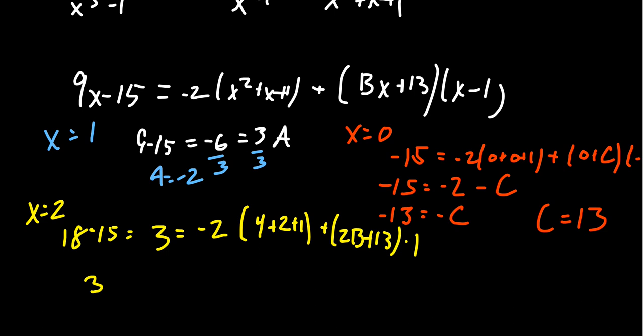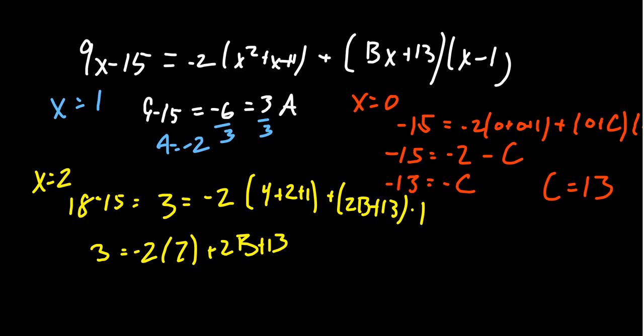So what do we have here? We have 3 equals negative 2 times 4 plus 2 plus 1 is 7, then we have 2B plus 13. Subtracting 13 from both sides, you get negative 10 equals negative 14 plus 2B. Adding 14 to both sides, we get 2B equals 4, and therefore B equals 2.